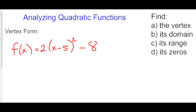We are going to analyze the graph of quadratic functions looking at three different types: vertex form, intercept form, and standard form. In all three of these forms, I'll show you how to find the vertex, find its domain, find its range, and find its zeros.